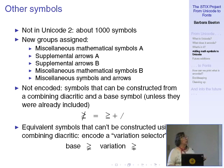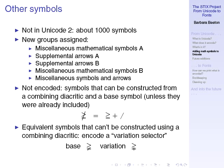For the real math symbols — the odd shapes — about 1,000 of those were added too. The new groups assigned were: Miscellaneous Mathematical Symbols A, Miscellaneous Mathematical Symbols B, Supplemental Arrows A, Supplemental Arrows B, and Miscellaneous Symbols and Arrows, with a couple of blocks reserved for future additions. They decided not to encode Unicode symbols that can be constructed from a combining diacritic and a base symbol, unless they were already there — such as not equal, not greater than, not less than — because potentially you can negate almost anything.